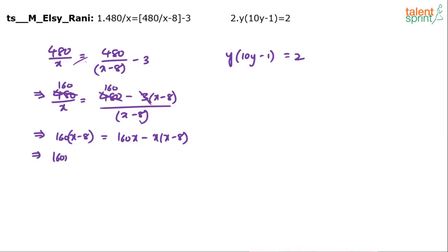So what happens: 160x minus 160 into, you can cut down the steps here, 160x minus x squared plus 8x. So 160x cancelled on both sides. So yeah the equation is simple right. x squared minus 8x minus 160 into 8 equals 0.